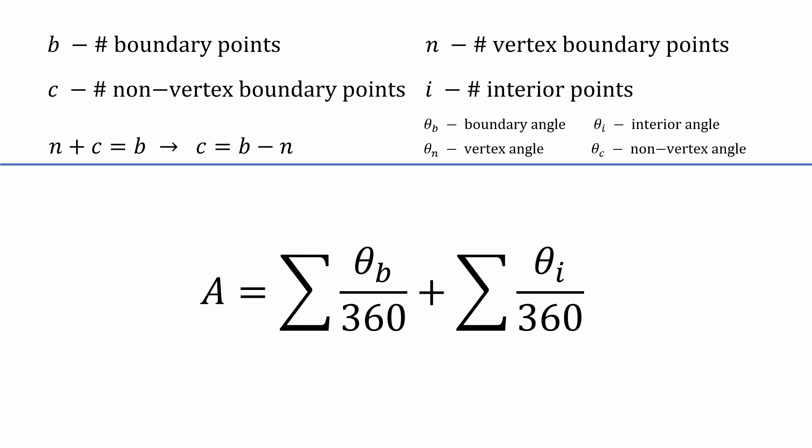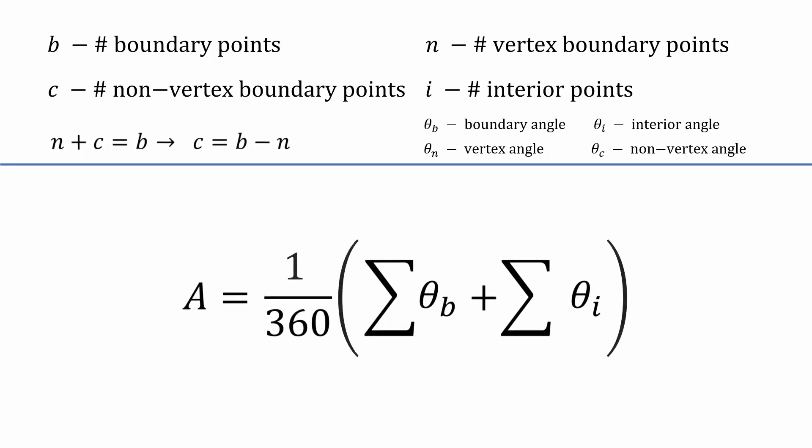Now, we're ready to transform this equation into something more useful. Let's first factor out the 360 from each of the denominators. Next, since the sum of all the interior angles is just 360 times the number of interior points, we can replace the second sum with 360i.